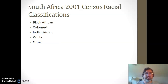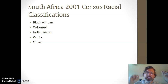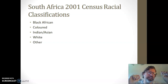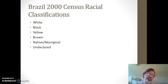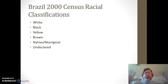Moving to the South African census in 2001, we get a distinction between black African and colored, Indian, Asian, white, and other. This means you could be black in the U.S. and move to South Africa and suddenly be classified in the colored category, which has a distinctive meaning there. The same could be true moving to Brazil — you could be black in the U.S. but move into the brown category. These things are fluid both over time and from place to place.